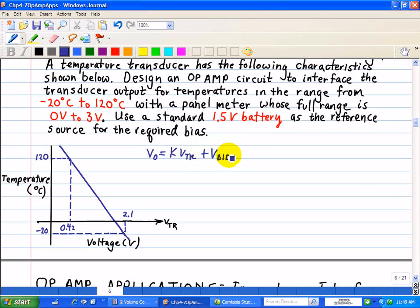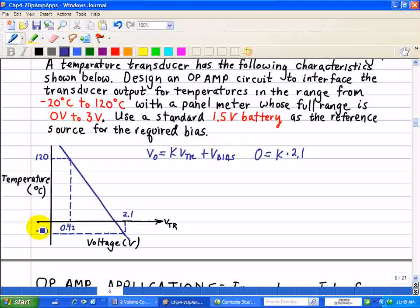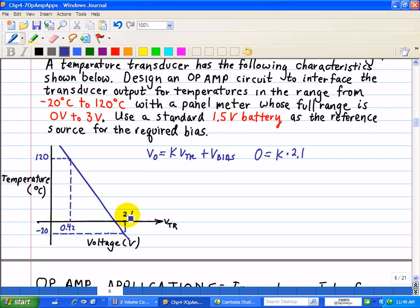I'm going to use this equation again to solve for our K and V bias. So in this example, 0 is equal to K times 2.1. So 2.1 times K corresponds to the 0 volt range. So negative 20, 2.1 to 0, plus a V bias. And this is at minus 20 degrees centigrade.